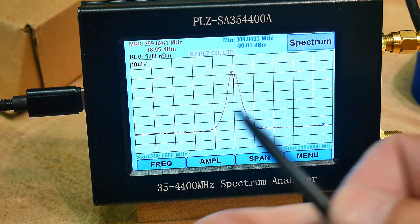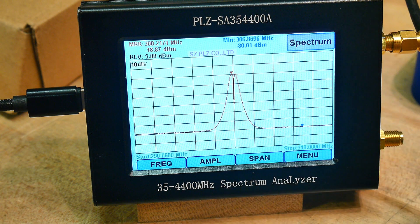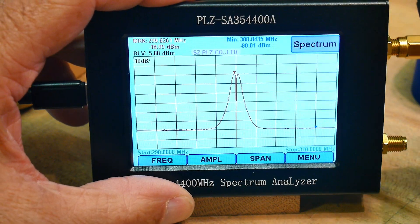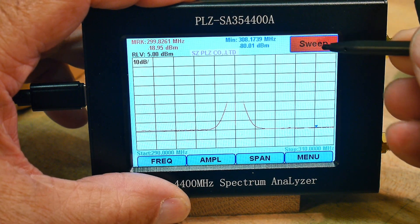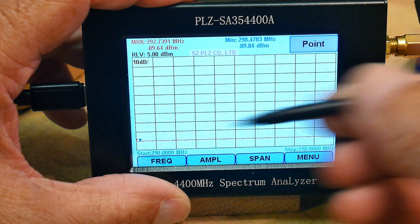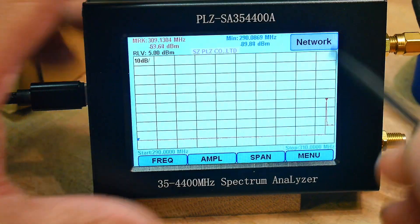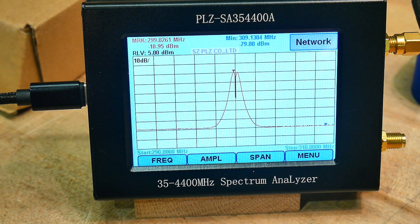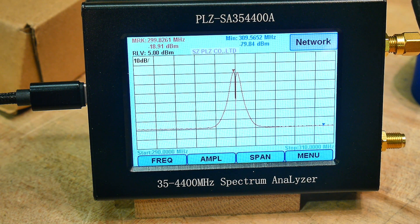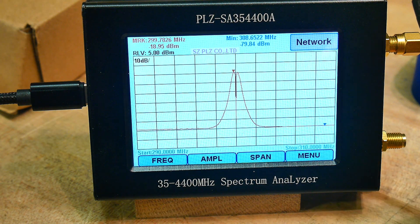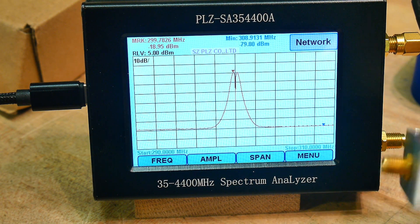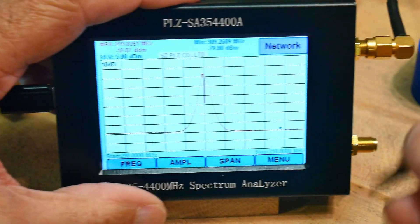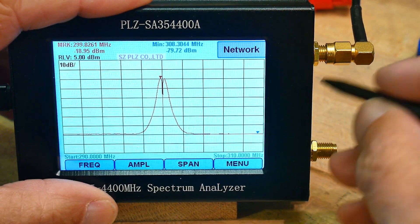Then we can go to the sweep and outputs. On the other one I did never get the S21 to work, the software was confusing me, but on this one I was able to sweep a filter. So here's a bandpass filter that I'll sweep, and so you connect it between the two ports and sweep it.